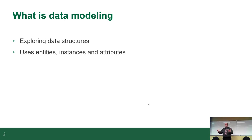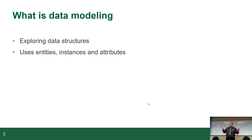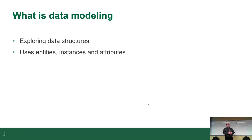When we talk about entities, attributes, and that kind of stuff, we're talking about data modeling. Data modeling is the process of exploring data structures. You look at the data, you look at how it's structured, and then you make a model out of it. In the end, you usually make a diagram — a pretty picture. Those of you that have started on Lab 2 have already started making their pictures for the first time, and the rest of you will discover it as you go.